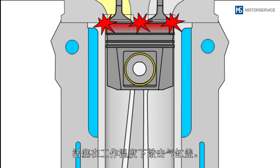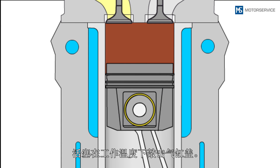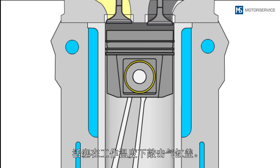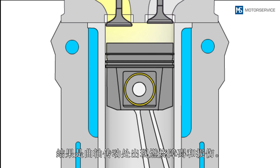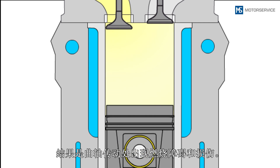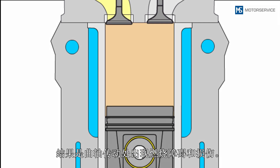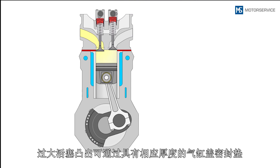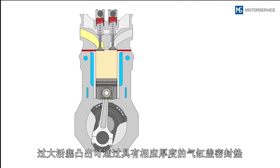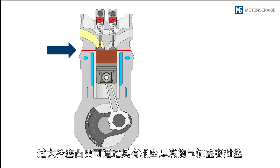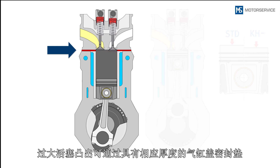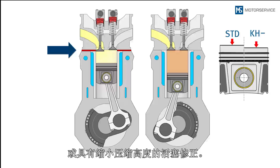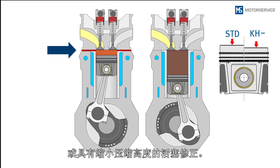If the piston protrusion is too large, the piston bumps against the cylinder head once it has reached operating temperature. This results in combustion errors and damage to the crank mechanism. Excessive piston protrusions can be corrected by means of cylinder head gaskets of appropriate thickness, or by using pistons with reduced compression height.